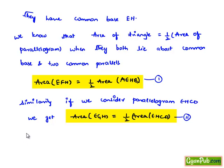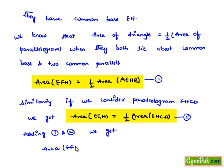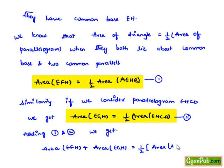Now adding equations 1 and 2, we get: area of triangle EFH plus area of triangle EGH is equal to half times the area of parallelogram AEHB.